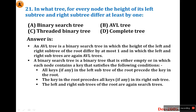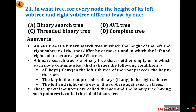A threaded binary tree has special pointers called threads; it is a binary tree with special pointers pointing to nodes. A complete binary tree requires all levels to be equal. Looking at the question — for every node the height of its left subtree and right subtree differs at most by one — the answer is B: AVL tree.